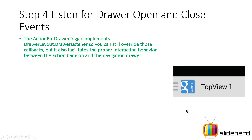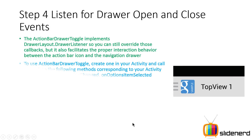When you select an item from the navigation drawer, you've got to make sure that the title in the action bar changes appropriately to indicate the name of the item that was selected. At the same time, when the user starts the app for the first time, there needs to be an indication in the top-left corner — those three horizontal bars — showing that there is a navigation drawer. All this behavior is controlled by your ActionBarDrawerToggle.